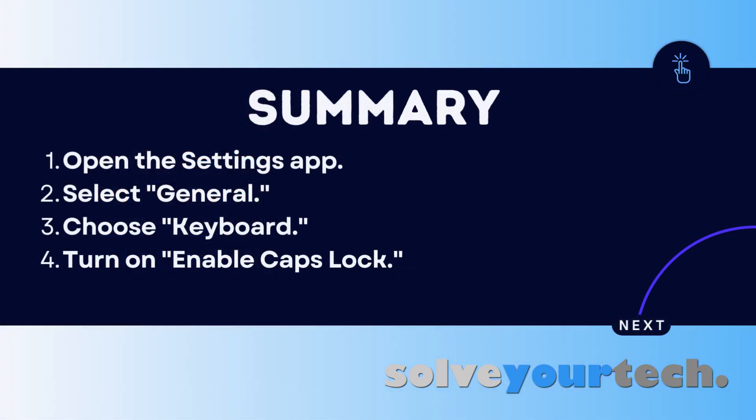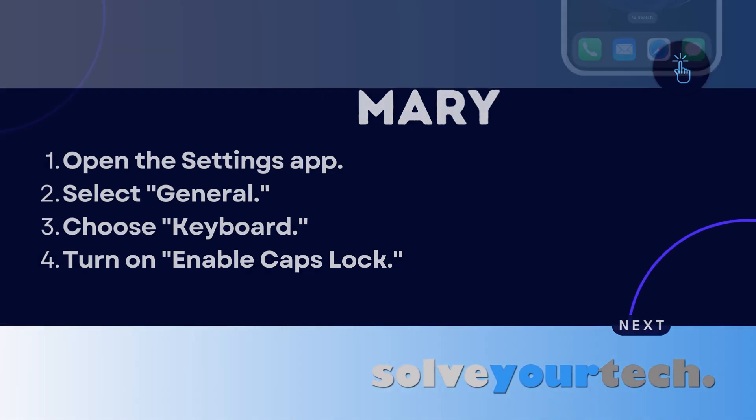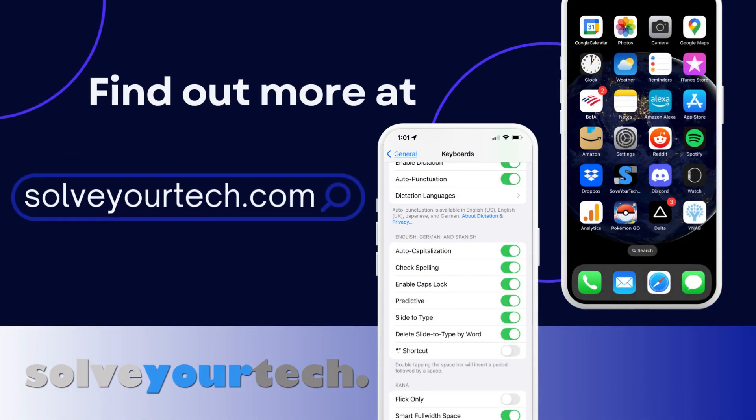To summarize, when you want to turn on Caps Lock on an iPhone, you need to open the Settings app, choose the General option, select Keyboard, then tap the button to the right of Enable Caps Lock to turn it on. For more information on this topic, and to read the full article, visit SolveYourTech.com.